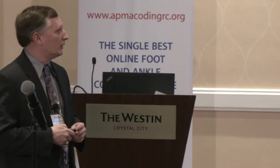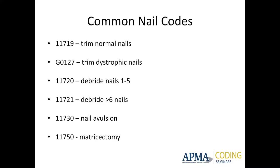11720 says I'm debriding at least one nail up to five nails, and these are going to be typically pathological nails — generally mycotic nails. So I'm debriding thickened dystrophic mycotic nails, reducing the bulk and reducing thickness. 11721 says I'm debriding six nails. With Medicare guidelines, those nails have to be symptomatic too. So it's really not that common to have a single patient with six mycotic symptomatic nails.